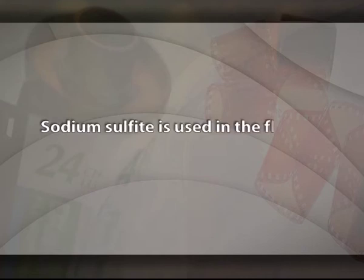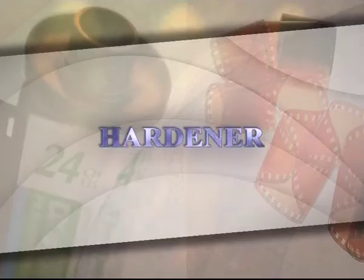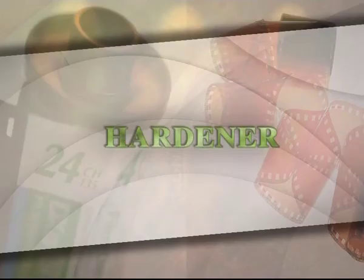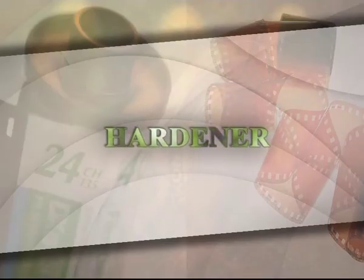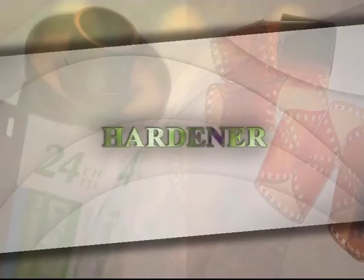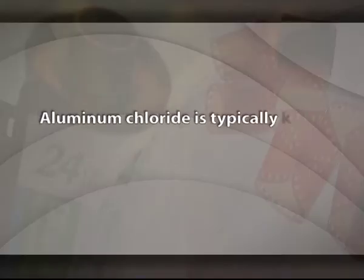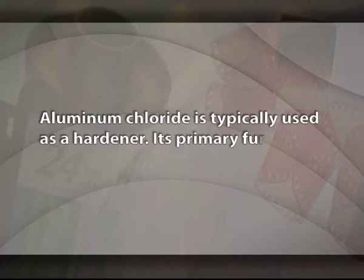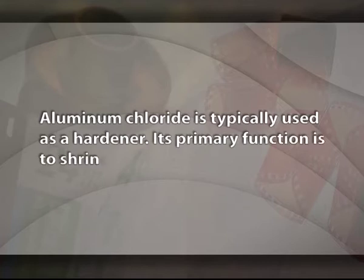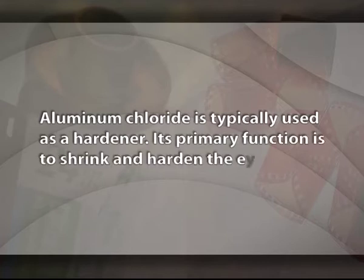Preservative. Sodium sulphide is used in the fixer as a preservative. Hardener. Aluminium chloride is typically used as a hardener. Its primary function is to shrink and harden the emulsion.